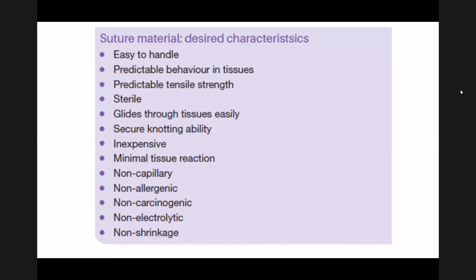For a suture material, the desired characteristics are that they should be easy to handle, have predictable behaviour in tissue, have predictable tensile strain, be sterile, glide through tissue easily, secure knotting ability, be inexpensive, have minimal tissue reaction, non-capillary action, non-allergenic, non-carcinogenic, non-electrolytic, and non-shrinkage. These are the ideal characteristics for a suture.